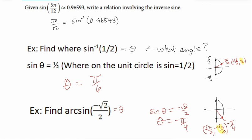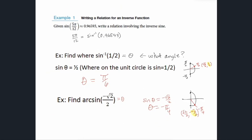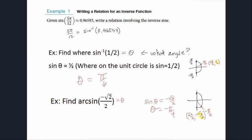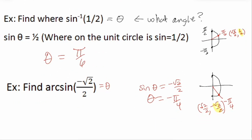For sine, tangent, and cosecant, a negative in front just puts a negative on the angle measure. √2/2 on the unit circle is 45 degrees, π/4, so a negative gives negative π/4 instead of positive π/4. Your answer will always be an angle measure. Sine only uses the first and fourth quadrants — the first for positives, the fourth for negatives.